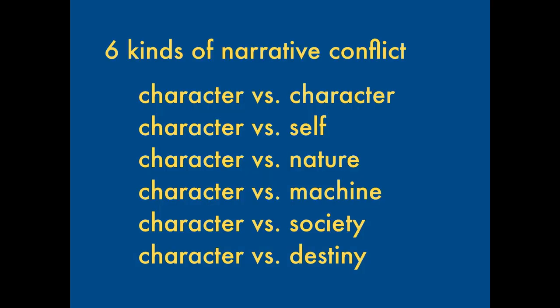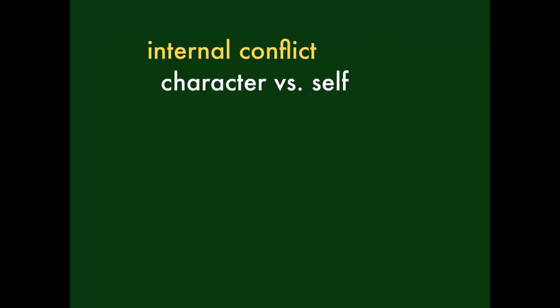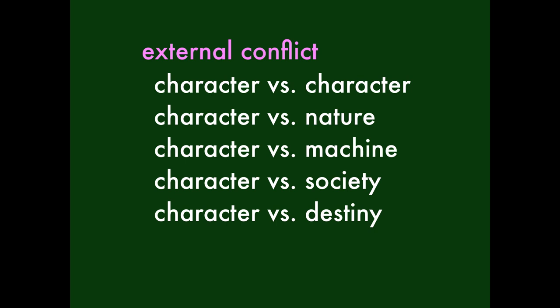The way I see it, there are six main kinds of narrative conflict: Character vs. Character, Character vs. Self, Character vs. Nature, Character vs. Machine, Character vs. Society, and Character vs. Destiny. You can classify these into two categories, internal and external. Character vs. Self is internal because it takes place within the character's head or heart. The rest are external because it's the characters in conflict with someone or something outside of themselves.